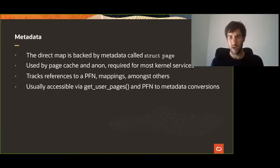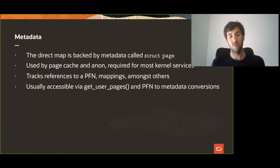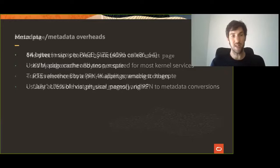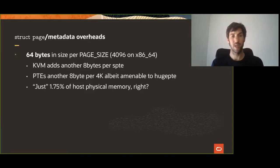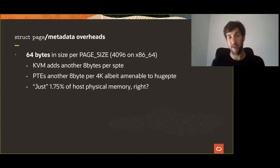Usually you get one of those struct pages when you use the buddy allocator with alloc_page or get_free_pages, or you grab a reference to an existing page with get_user_pages where you pin memory short or long term. Although the data structure has some overhead — the size of the structure is about 64 bytes — and it's usually tracking 4K. Although certain architectures allow this to be tracked in a bigger chunk; for example, ARM64 lets you play with the underlying page size, such as 64K.